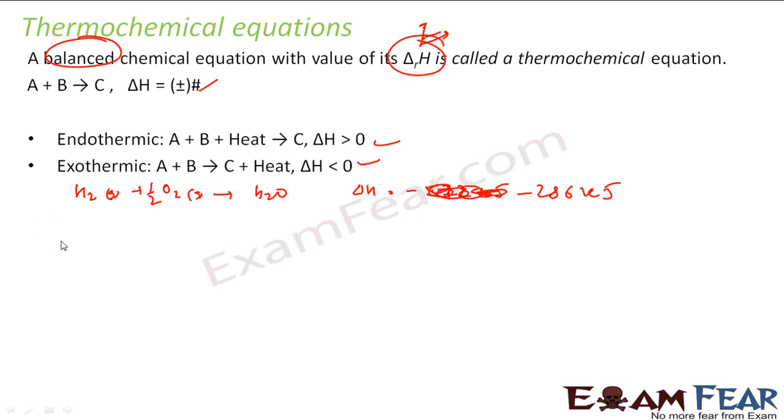If you multiply by 2, you get 2H2 plus O2 gives 2H2O, and delta H is minus 572 kilojoules. This explains that enthalpy is an extensive property. When you increase or double the quantity, the enthalpy also doubles.